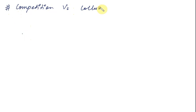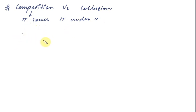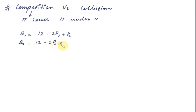Hi guys, welcome back. In this video I'm going to start with the next section in which we talk about competition versus collusion. We want to point out that we have already seen that when firms compete, the profits are lower than the profit under collusion. Let's prove this using the same example from the last video, which was about differentiated products. We had q1 equal to 12 minus 2p1 plus p2, and q2 equal to 12 minus 2p2 plus p1.